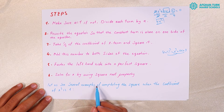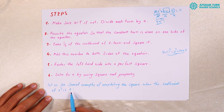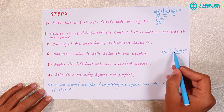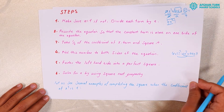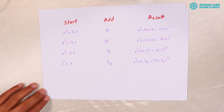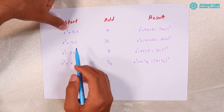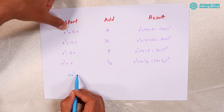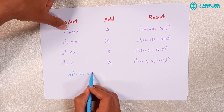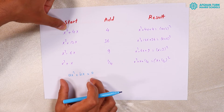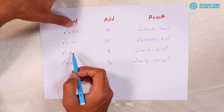Let us see several examples of completing the square when the coefficient of X squared is equal to 1. When the coefficient is 1, we will see how to complete the square. For example, look at X squared plus 4X. If we have a question like AX squared plus BX equals 0, how can we complete this square? Take X squared plus 4X.